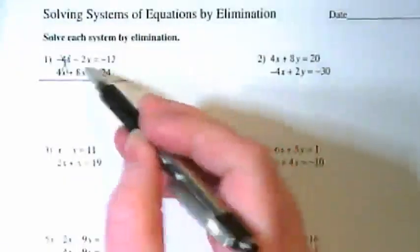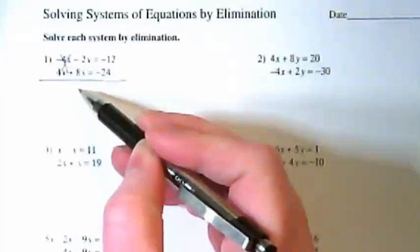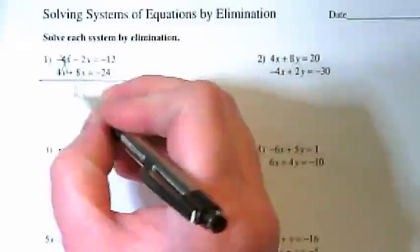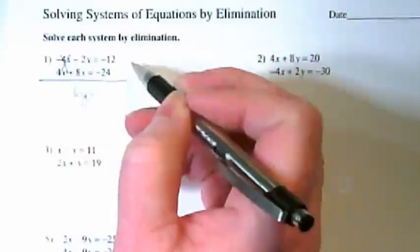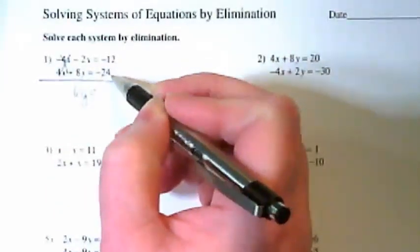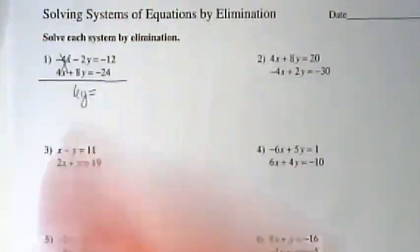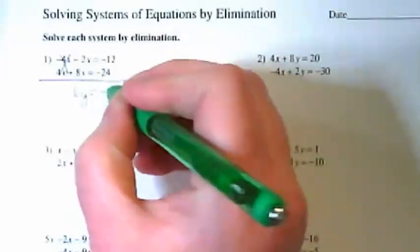We have a negative 2y and a positive 8y, so what's that going to leave us with? 6y. And then on the right side of the equation we have negative 12 and negative 24. It's going to give us negative 36.